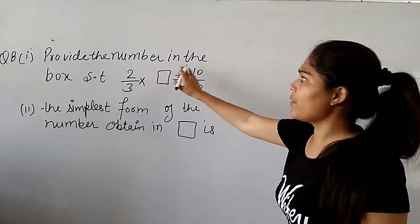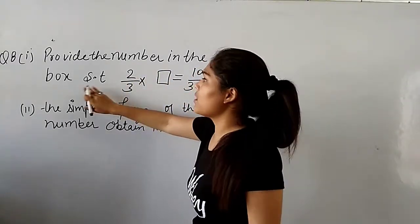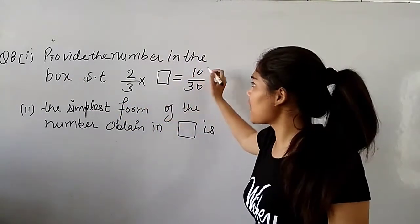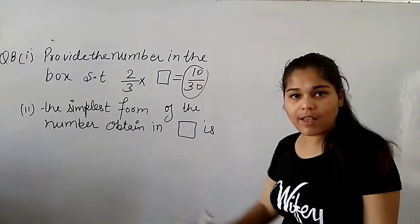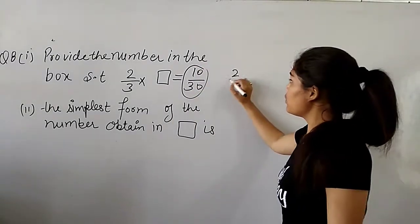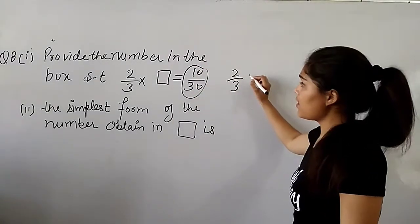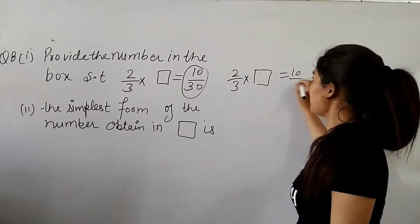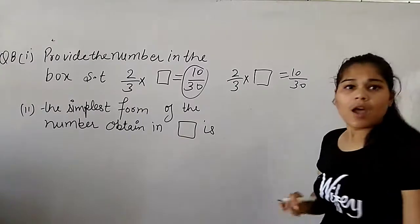Provide the number in the box. First, you can provide a number in the box. What do you need to do? To solve, you will need to multiply by 30. So, 2 by 3 into box equals 10 by 30.